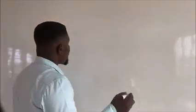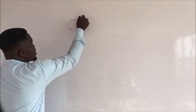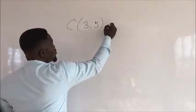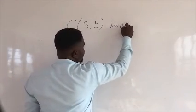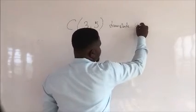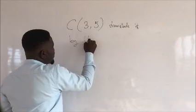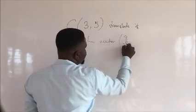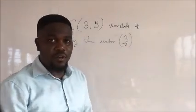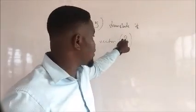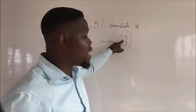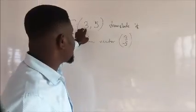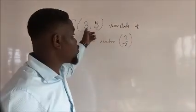In translation, when you are given coordinates C (3, 5) and they ask you to translate it by the vector (3, -5), don't let this confuse you. Three on five—there is no 'over' there. In vectors, you don't write 'over.' It is three on five; that is how we pronounce it. It is the same as what you see over here: (3, 5). These (3, 5) you see could be written in this form.